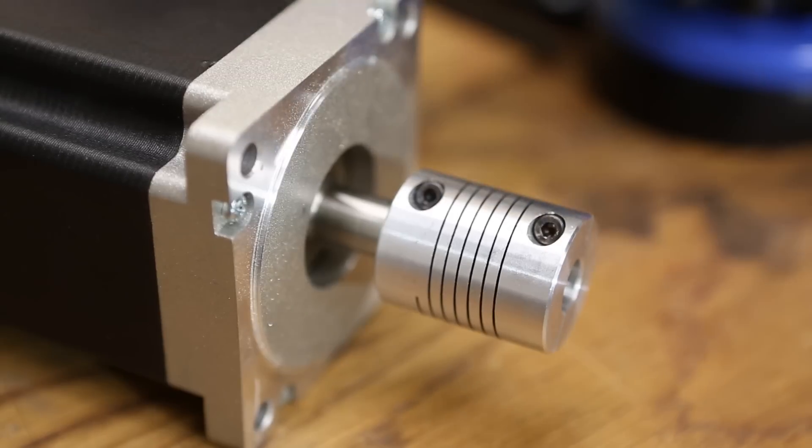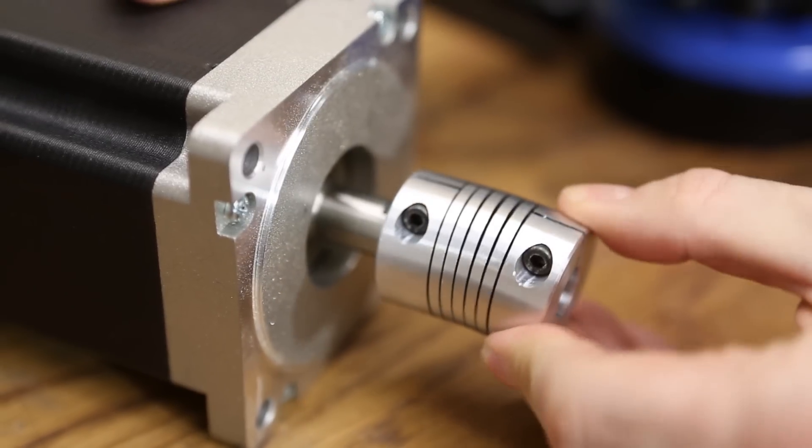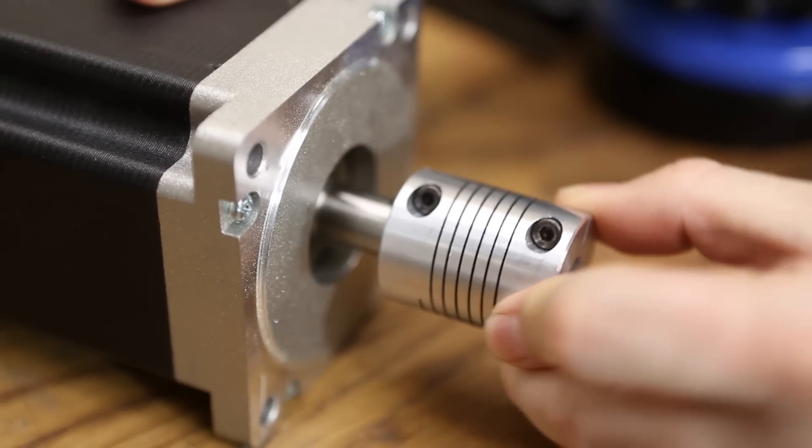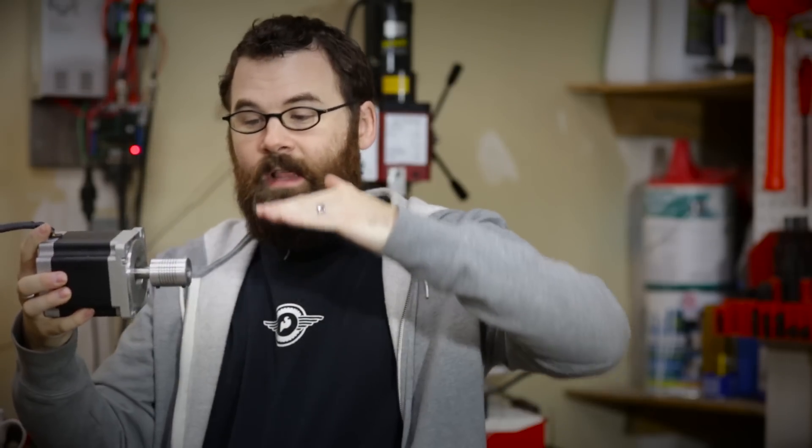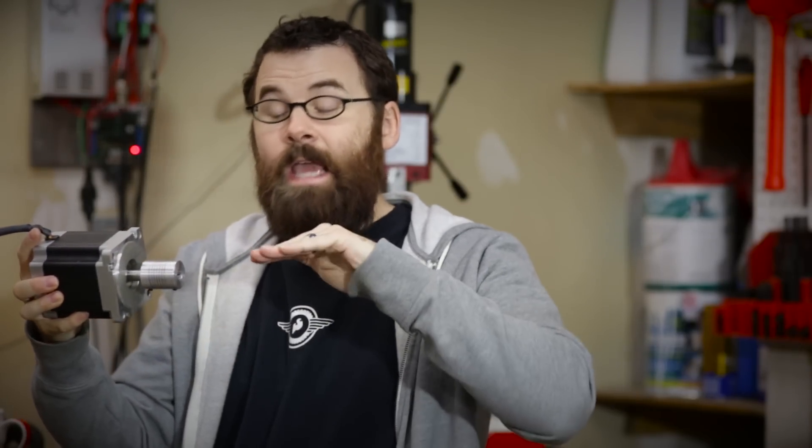What if you have two shafts that are slightly misaligned? This is an example of a helical coupler. It just has these spiral cuts, which allows for angular misalignment. You might not be able to line up the shaft like this, but if you have any angular misalignment, that's exactly why you would use a helical coupler. A traditional shaft coupler is going to be good for two shafts that are perfectly aligned. A helical coupler is going to be good for shafts that have a little bit of angular misalignment.